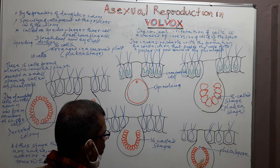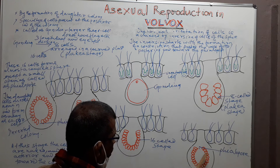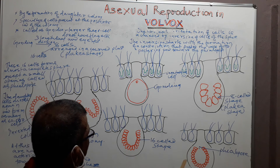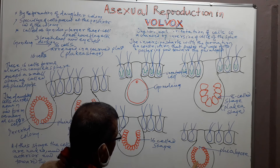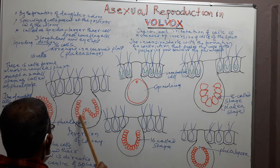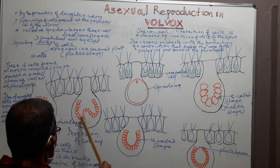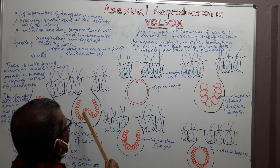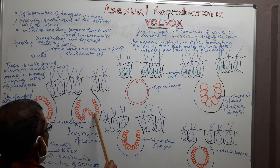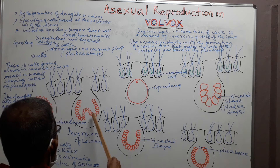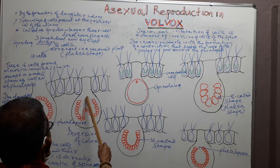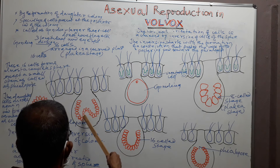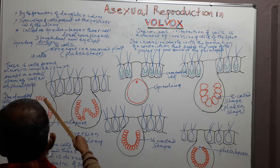The normal orientation of the cell is necessary to form a Volvox colony. The normal orientation of the cell is achieved by the inversion of the sphere. The inversion of the sphere starts with the formation of a constriction. This constriction pushes the cells of the posterior end toward the phialopore. Due to the activity of the constriction, the orientation of the cells becomes normal.